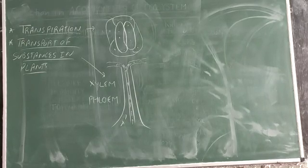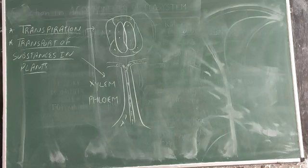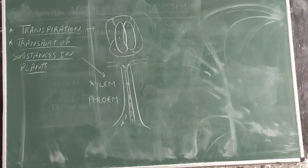This is how the transport of substances in plants takes place. Xylem tissue helps in the conduction of water and minerals. It goes to the leaf and leaves from the stomata absorb the carbon dioxide, manufacture the food by the process of photosynthesis in the chloroplast tissue.